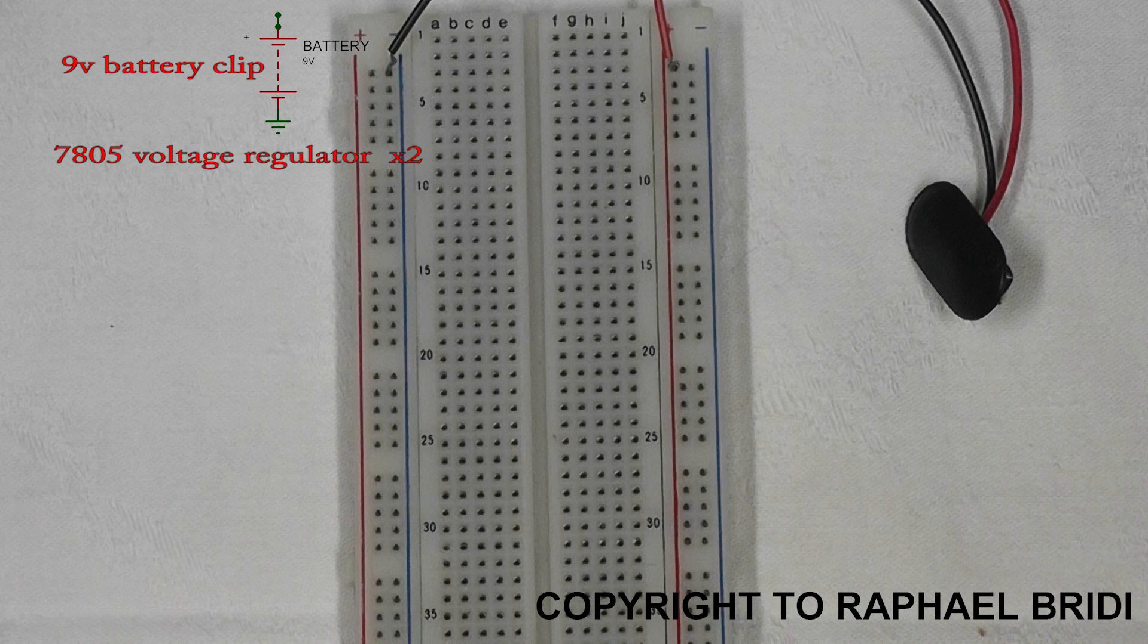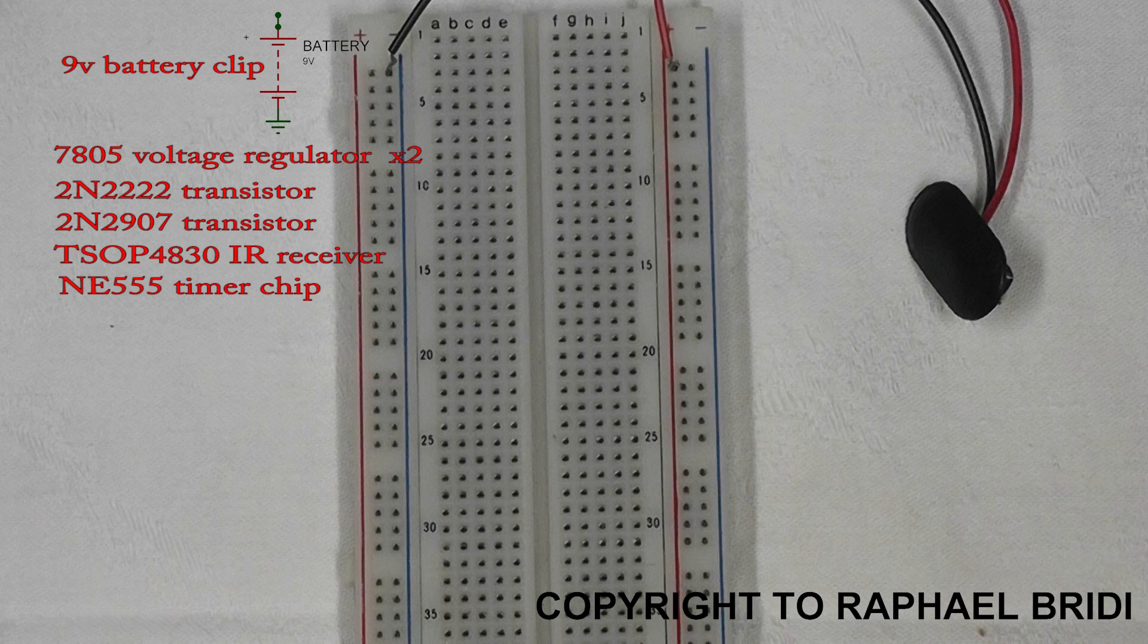For this project you will need a 9 volt battery clip, a 7805 voltage regulator, 2N2222 and 2N2907 transistors, an infrared receiver, and a 555 timer chip.